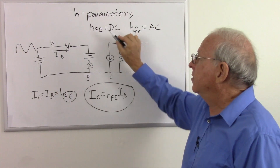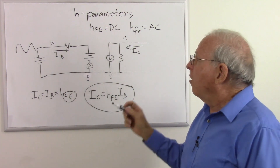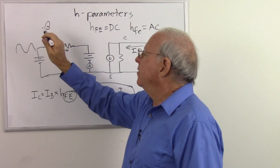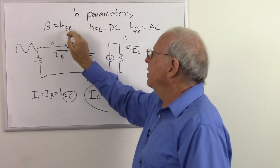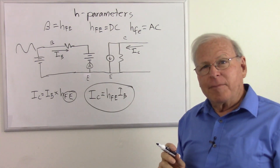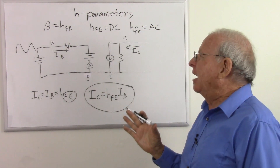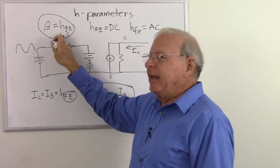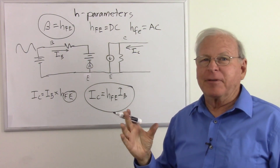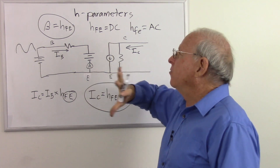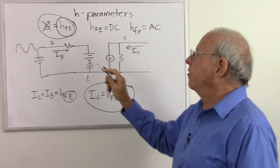These are sometimes called the small signal parameters, and the uppercase ones the large signal parameters. Uppercase letters: DC. Lowercase letters: AC. This is also known as beta — the Greek letter beta. Most people who say beta mean HFE, but not always — there are two or three different theories about what beta actually means. They do not use beta in data sheets; they only use HFE. So I always use HFE — that's what's used in the data sheets and that's industry standard.